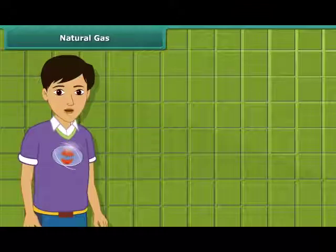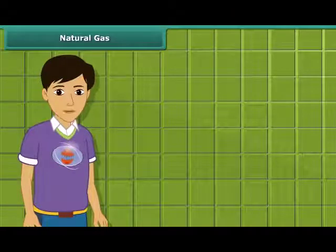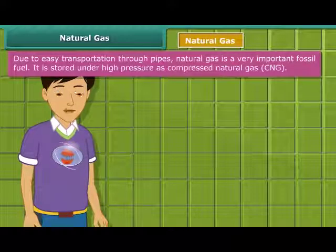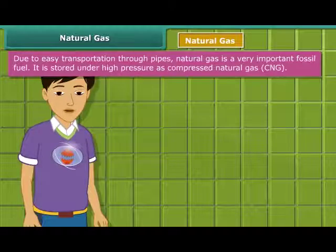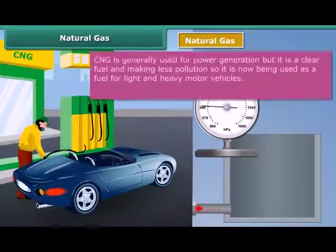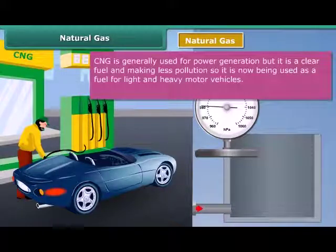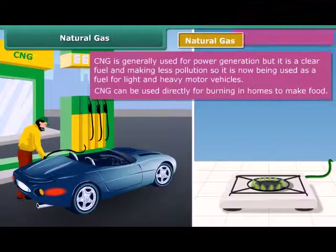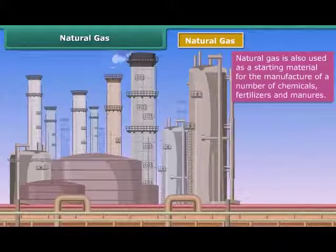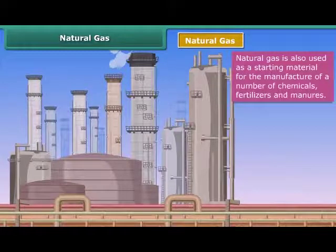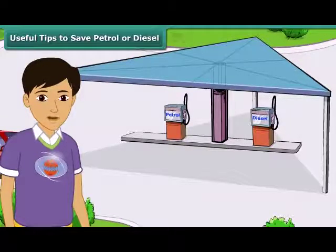Now let's move on to our next exhaustible natural resource: natural gas, also known as compressed natural gas or CNG. It is stored under high pressure as compressed natural gas. CNG is generally used for power generation, but due to being less polluting, it is also being used as a fuel for vehicles and for cooking purposes. Natural gas is also used as a base material for the manufacture of a number of chemicals and fertilizers.